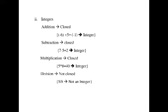Next, we see about the closure property for integers. For addition, integers are closed under addition. For example, minus 6 plus 5 equals minus 1. Here minus 1 is an integer, and minus 6 and 5 are also integers. In subtraction, for example, 7 minus 5 equals 2, so integers are closed under subtraction.